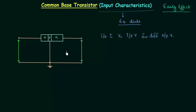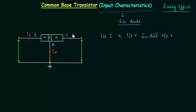This is the common base configuration of the transistor. I am using an NPN transistor. This is the emitter, this is the base, and this is the collector. The direction of emitter current is IE, the direction of base current is IB, and the direction of collector current is IC.